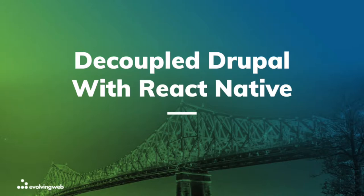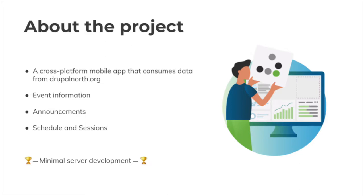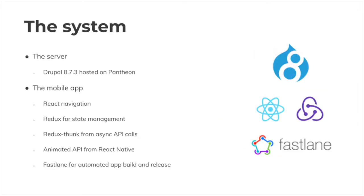Let's get started. It's about Drupal with React Native. I want to build a cross-platform mobile application that consumes data from DrupalCon.org — a very simple application where you can see all the information of the event like the location, the list of sessions, the schedule and the list of sponsors. My goal is to minimize the server development, which means I would like to use the JSON API data as much as possible. The system has the server, which is Drupal hosted on Pantheon, and the mobile application where I use React Navigation, Redux, Redux Thunk, Animate API and Fastlane.